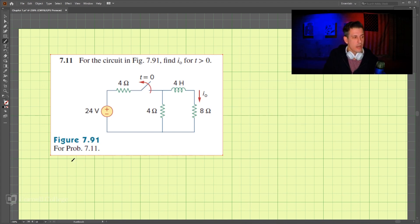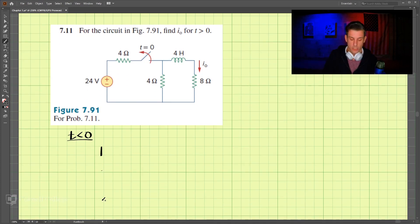So let's first concentrate on t is less than zero. For t is less than zero, the circuit would look something like this. We have the resistor here, resistor here, and if this is connected for a long time, this becomes a short circuit.